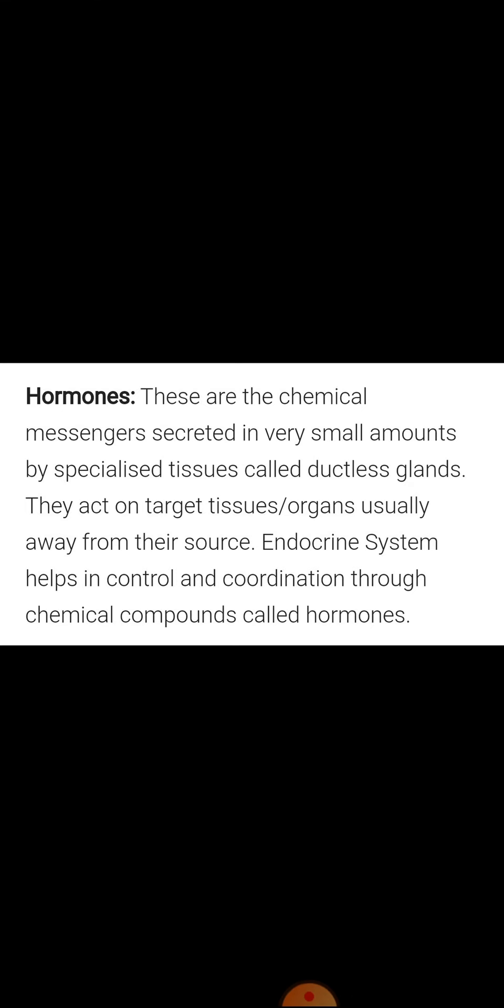For example, insulin is a hormone secreted by the pancreas. It controls the blood sugar level — when insulin level increases, it brings it back to normal. If it is not controlled, it may cause a disease known as diabetes. So insulin produces a particular effect in a particular organ. That is why not all body parts secrete hormones — only specific ones do, and those are what we are going to discuss.